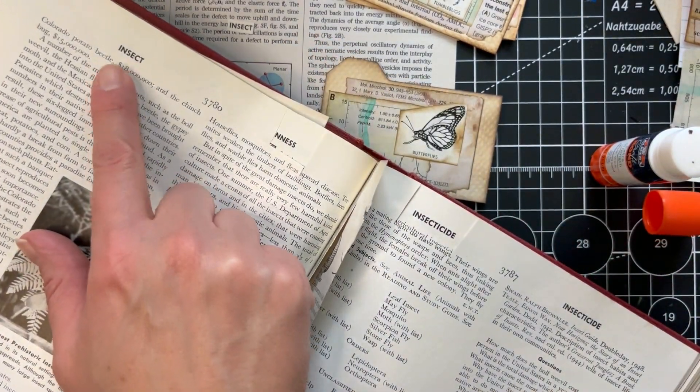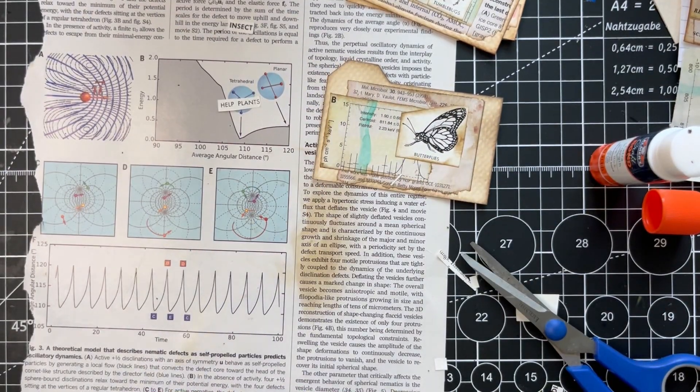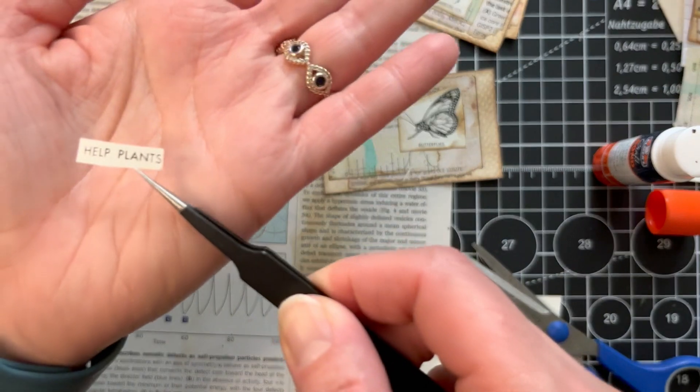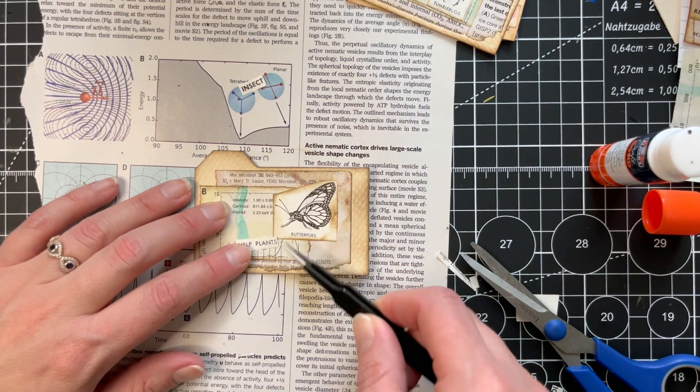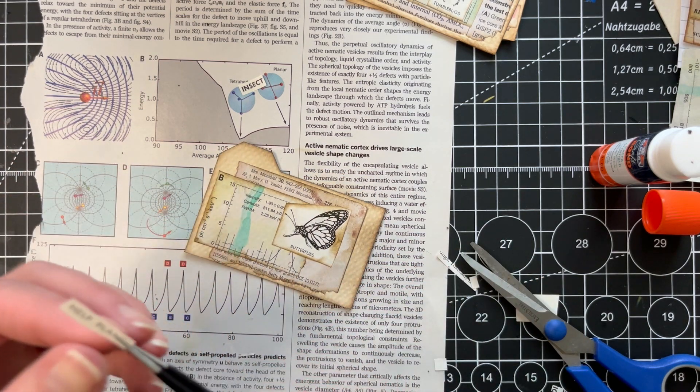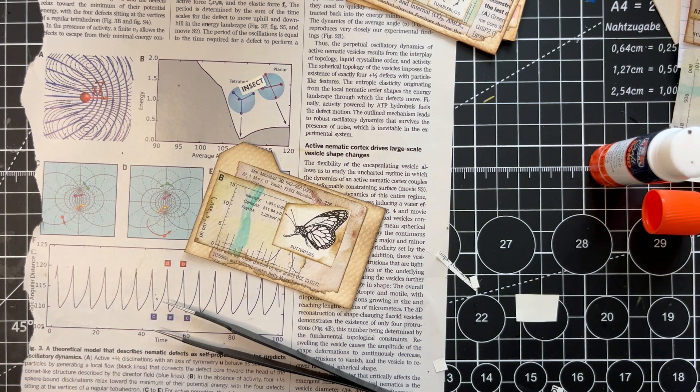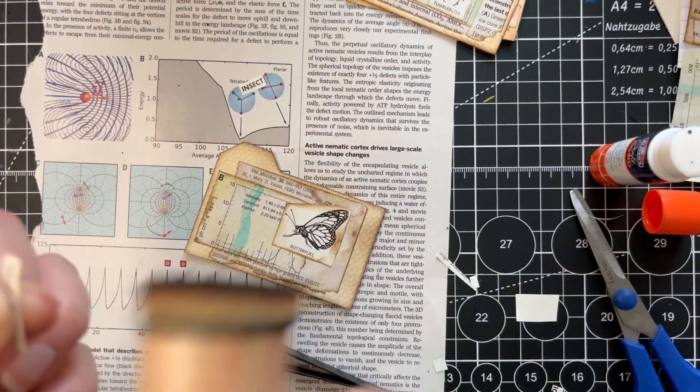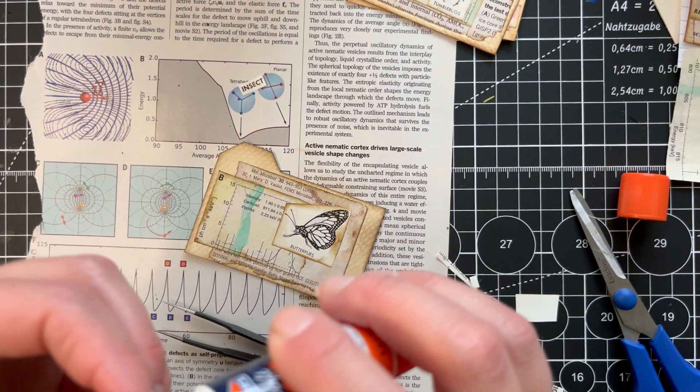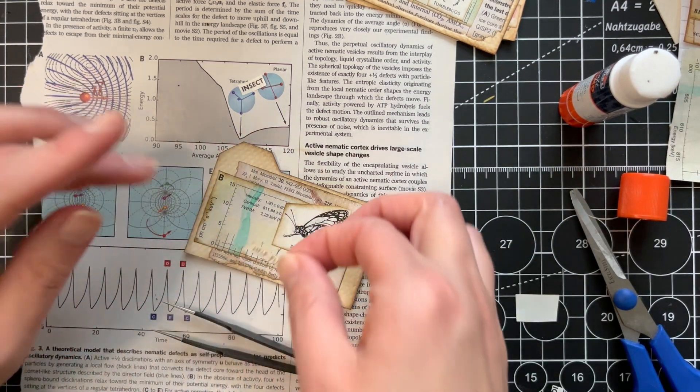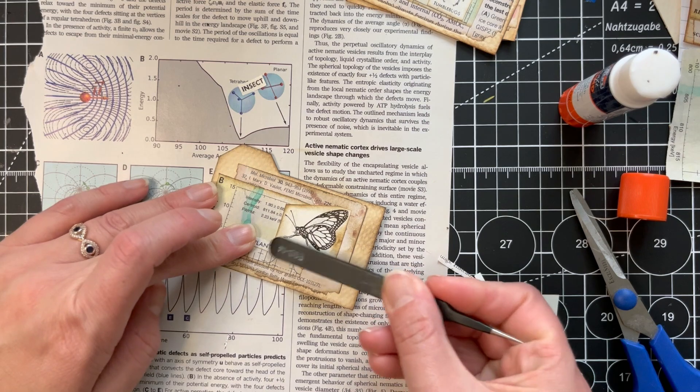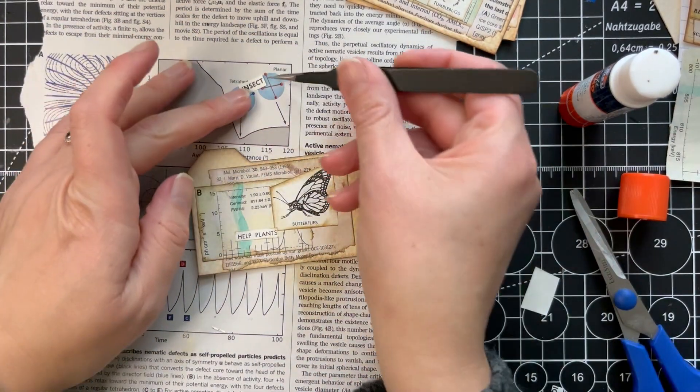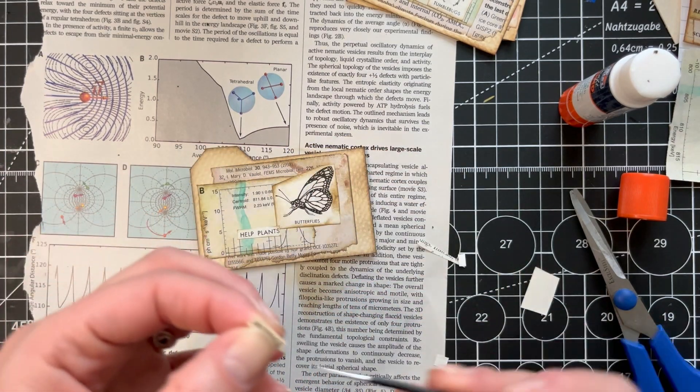Okay. So I chose that insect word from the encyclopedia, which I have here. And then I have the help plants. So I want to put the help plants like there. I think I'm gonna try to, it's not straight. Okay. I'm gonna try to ink the edges lightly because I don't want to cover the whole word. Just a little bit. And then glue it.